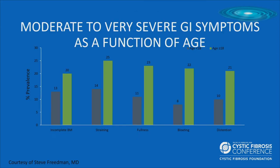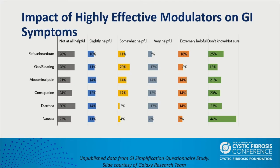Symptoms are usually reported as moderate to very severe. In adult patients over 18, across the board, over 20% report symptoms such as incomplete bowel movements, straining, fullness, bloating, and distension — all meeting criteria for an IBS diagnosis. The impact of highly effective modulators on GI symptoms from the Galaxy survey: modulator therapy did not improve GI symptoms. Looking at the 'extremely helpful' column for abdominal pain, constipation, and diarrhea, most survey respondents did not feel these medications were very helpful for GI symptoms.